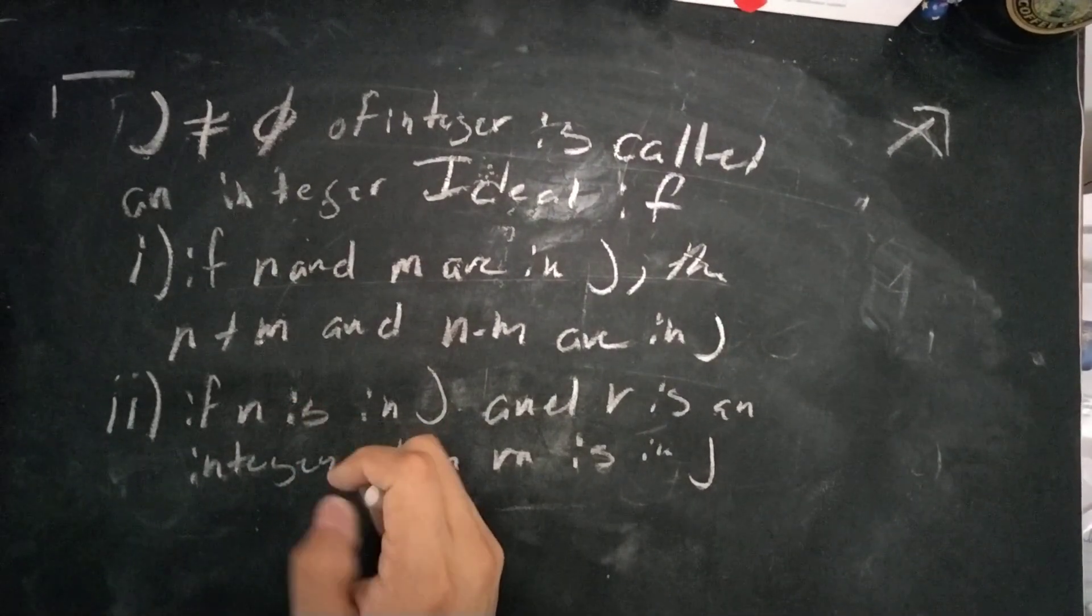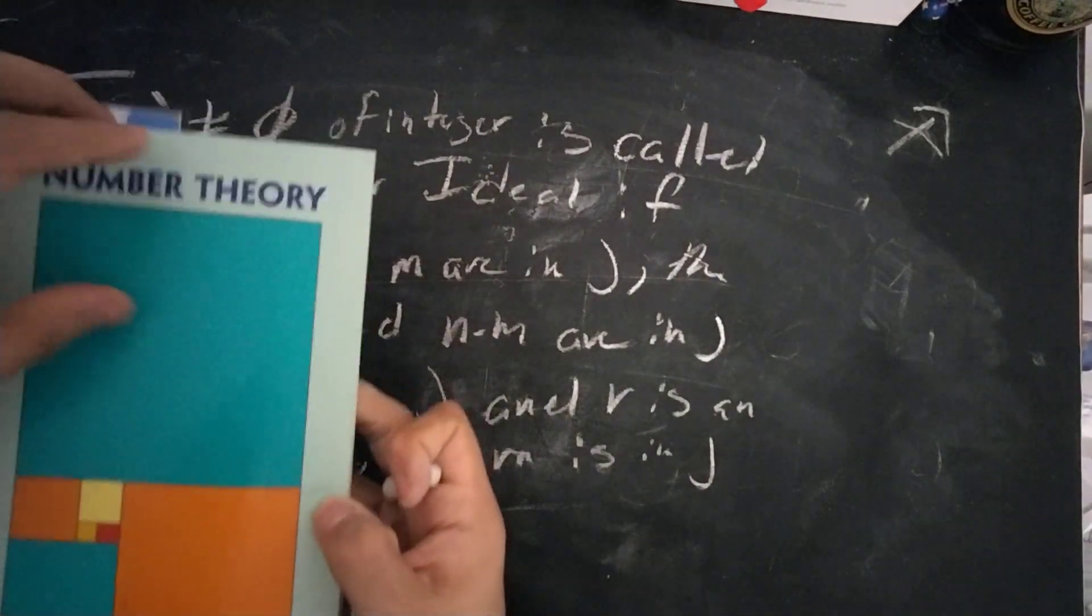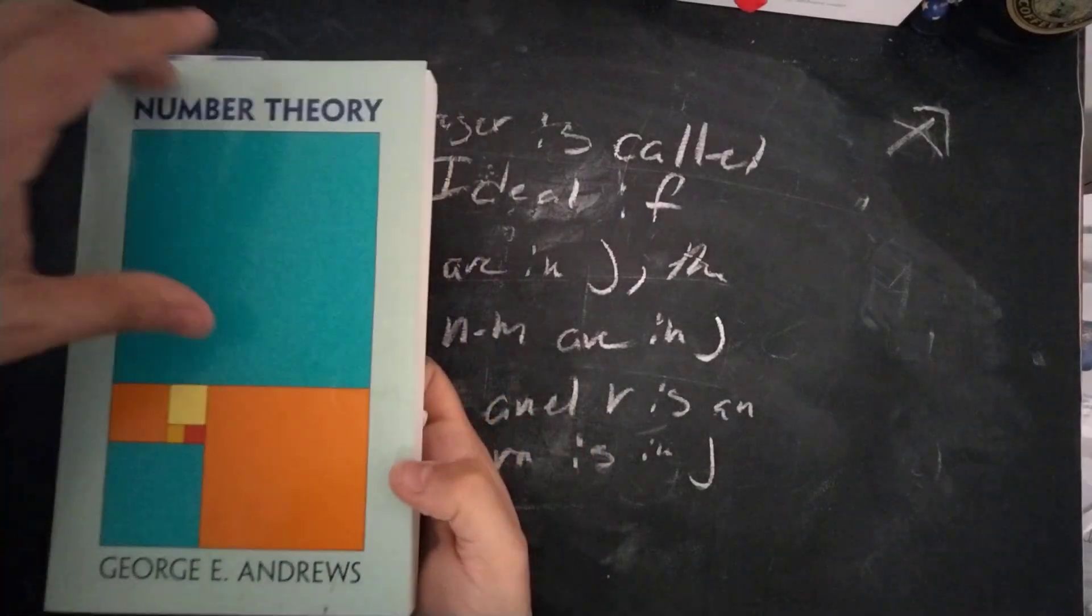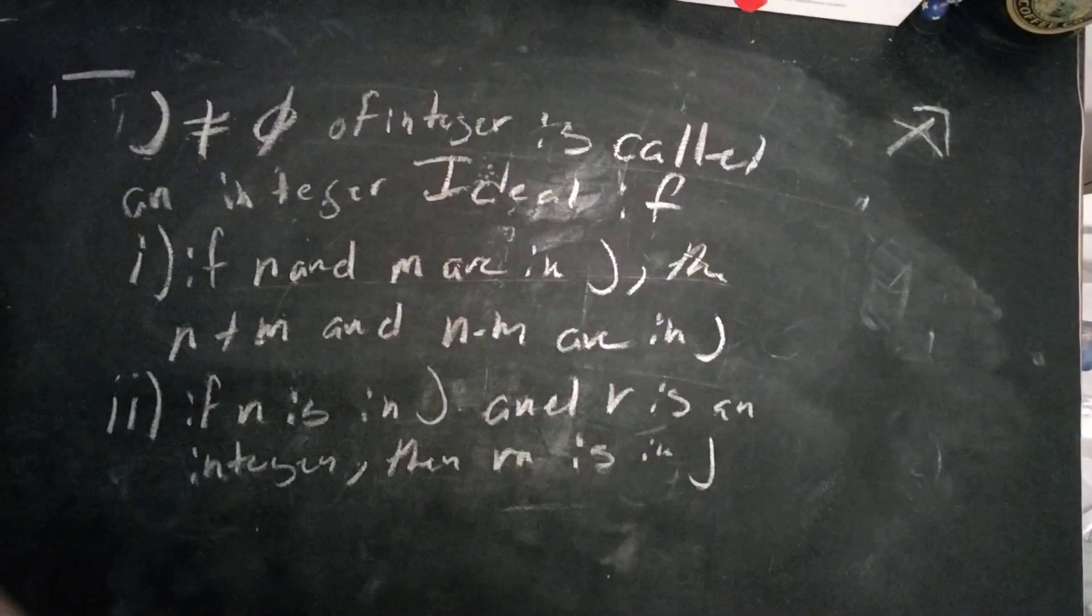Hello there friends, today we're going to be solving problem 4 from section 2-1 from number theory by George E. Andrews.